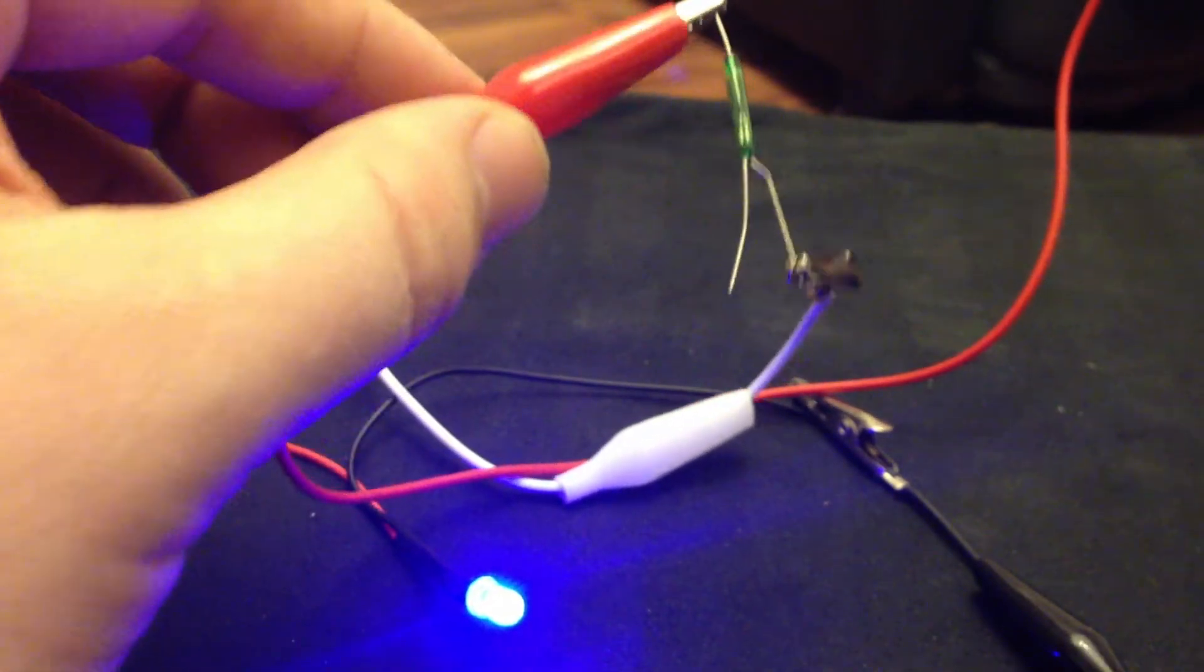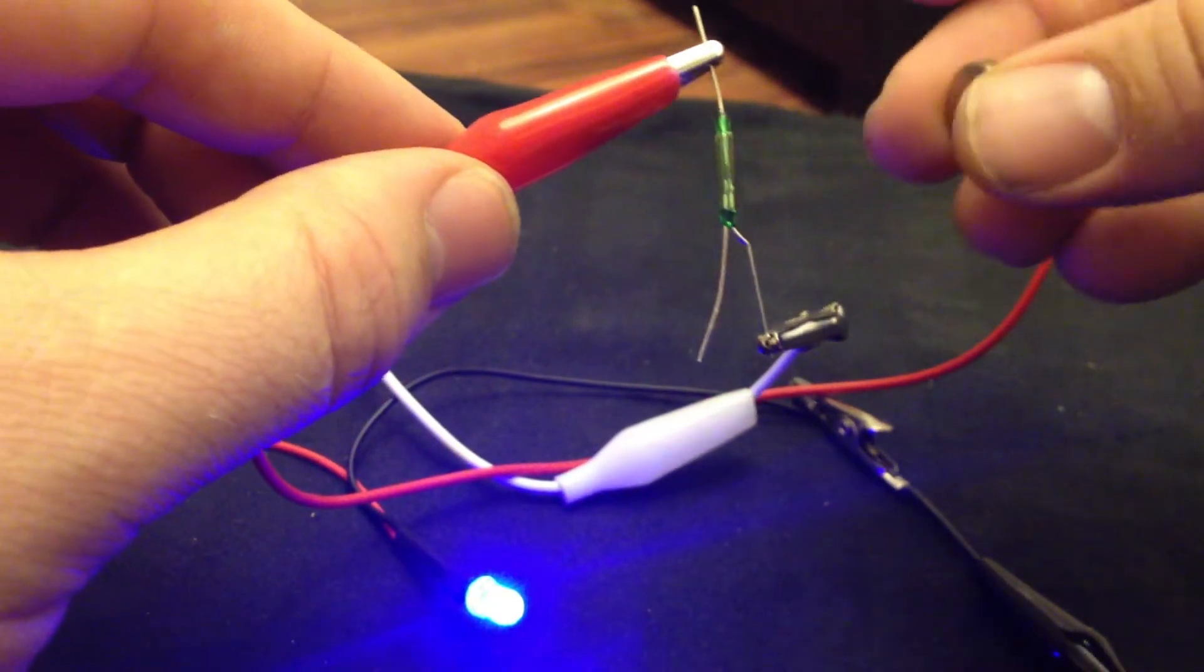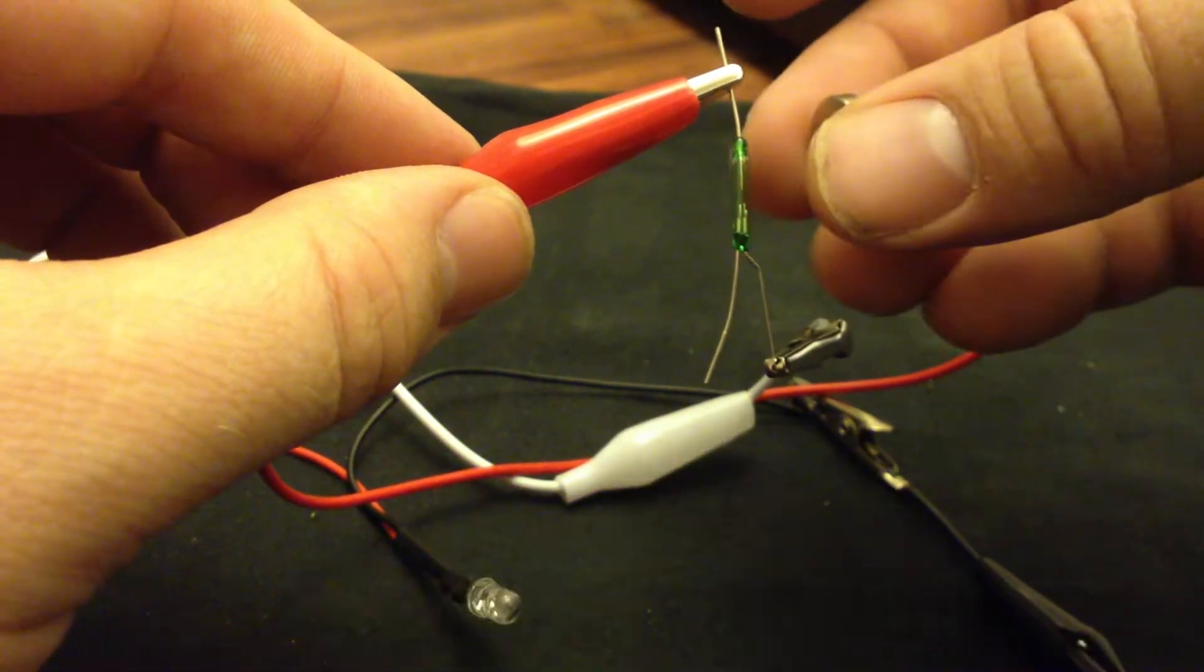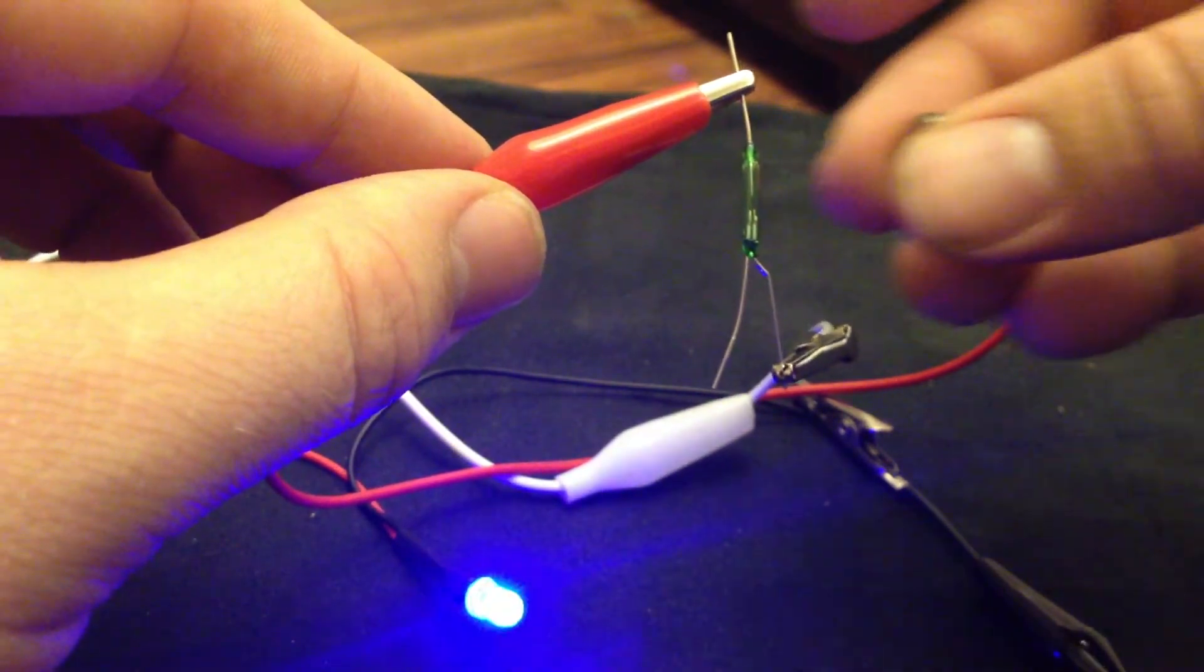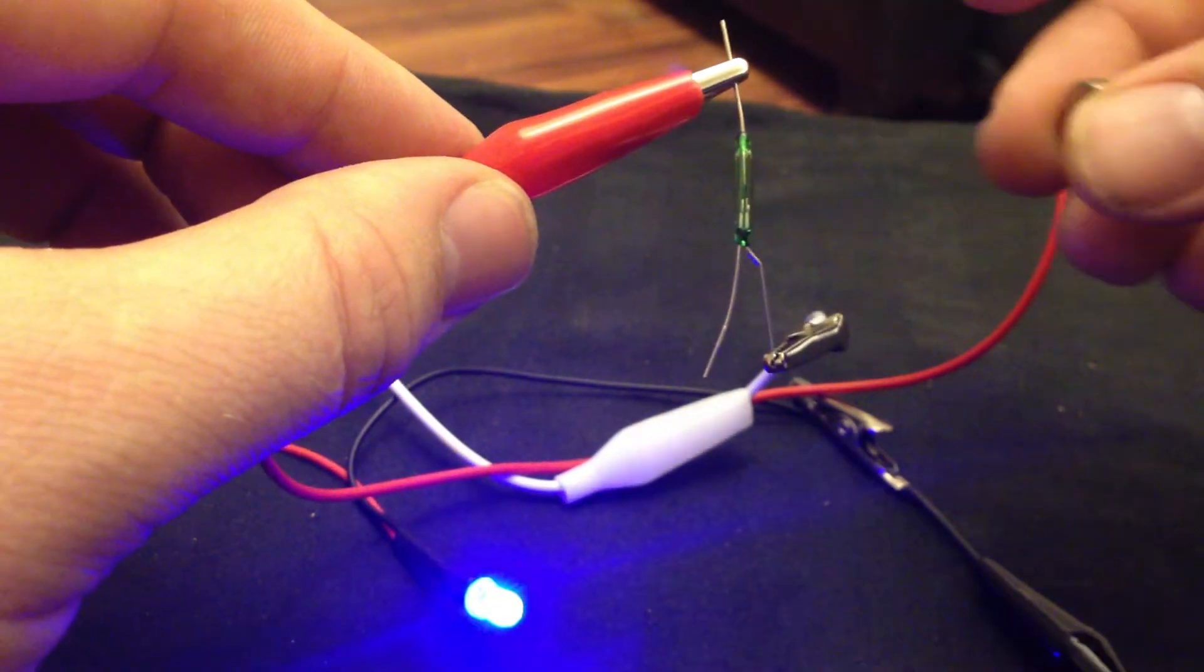So this one, you take the magnet and you bring it close to it, and it turns off. This would be the normally closed position.